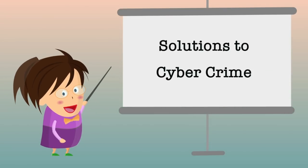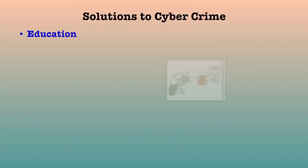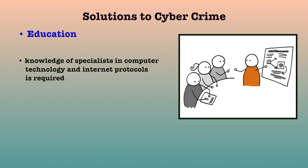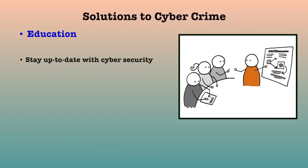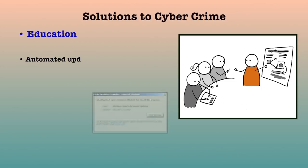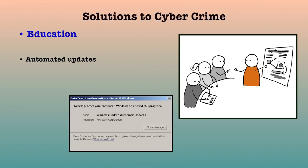Now we will discuss various solutions to cybercrime. The first solution is education. Cybercrime is difficult to prove as it lacks the traditional paper audit trail, requiring knowledge of specialists in computer technology and internet protocols. We need to educate citizens to continuously maintain and update the security of their systems. We also need to educate corporations in the best practices of effective security management. For example, some large organizations have policies that all systems must meet strict security guidelines, with automated updates sent to all computers and no new system allowed online until it conforms to the security policy.